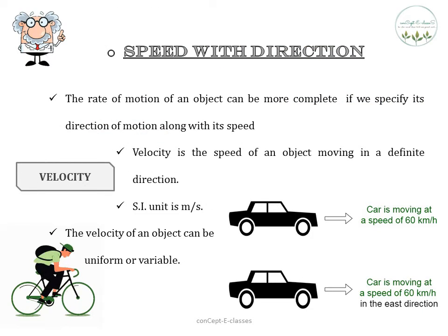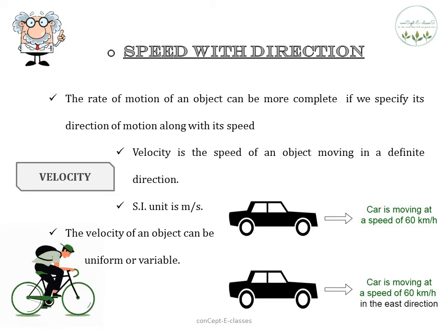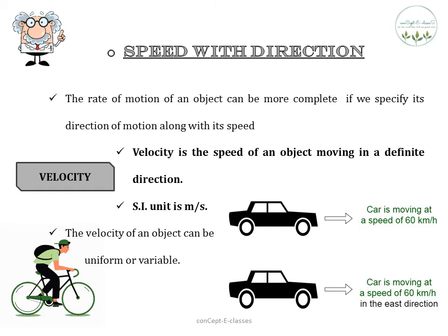We discussed how to find the rate of motion without direction — speed without direction. Now let us see what happens if we want to find the rate of motion with direction. The rate of motion of an object is complete if we specify the direction of motion along with its speed. The speed with direction is called velocity. Velocity is the speed of an object moving in a direction, or we can say displacement divided by time gives velocity. Its SI unit is also meter per second. When we say a car is moving at 60 km in a specific direction, that is the velocity.